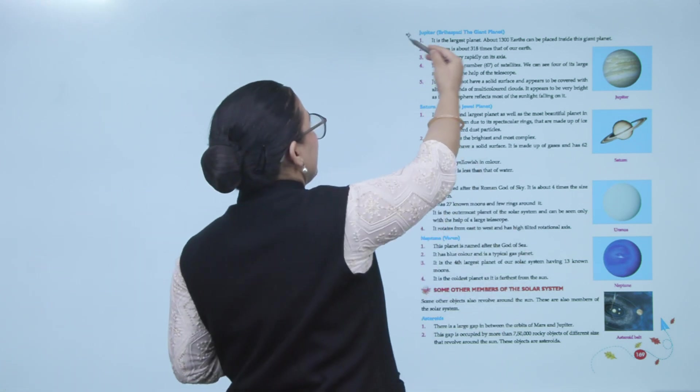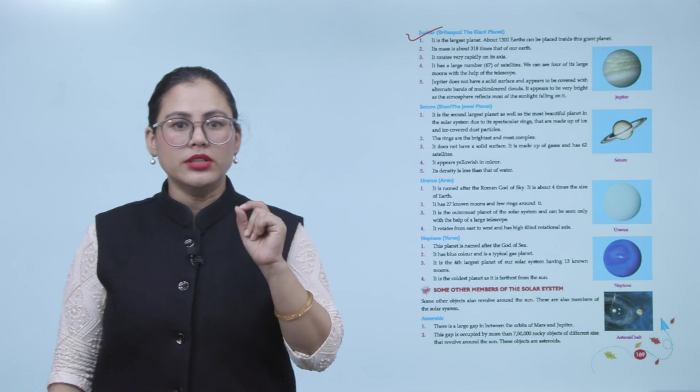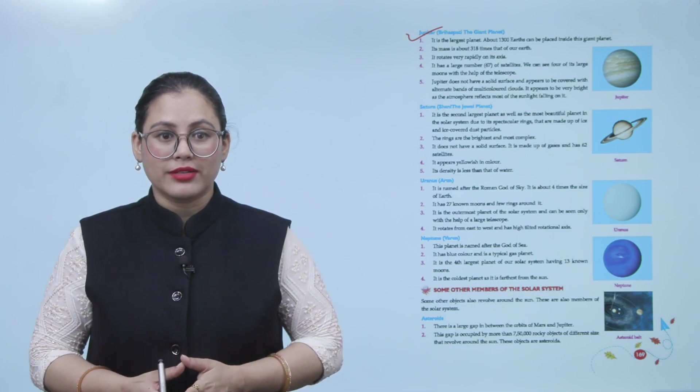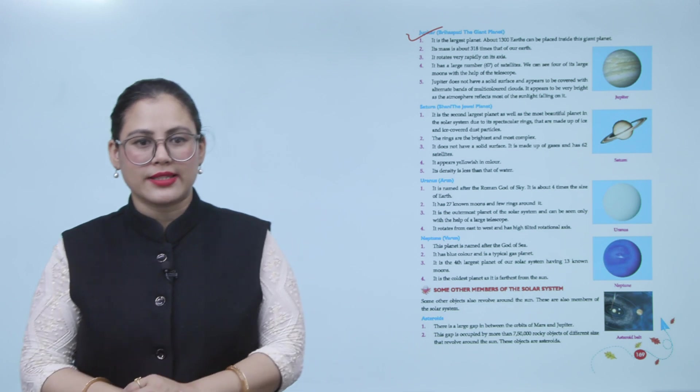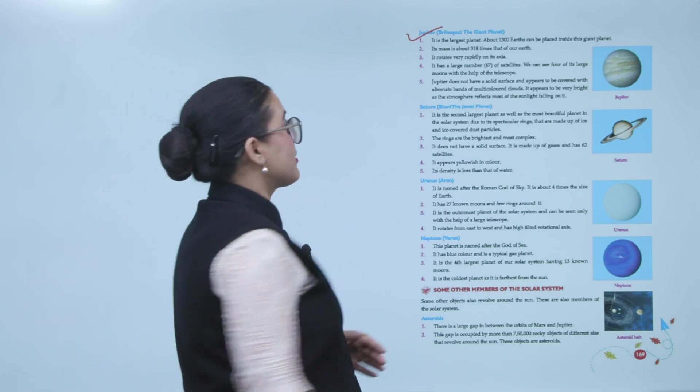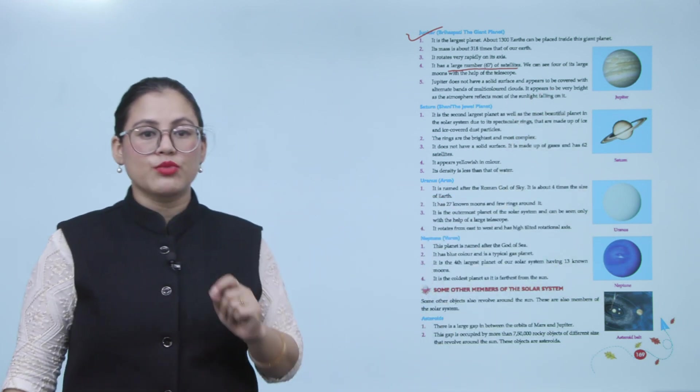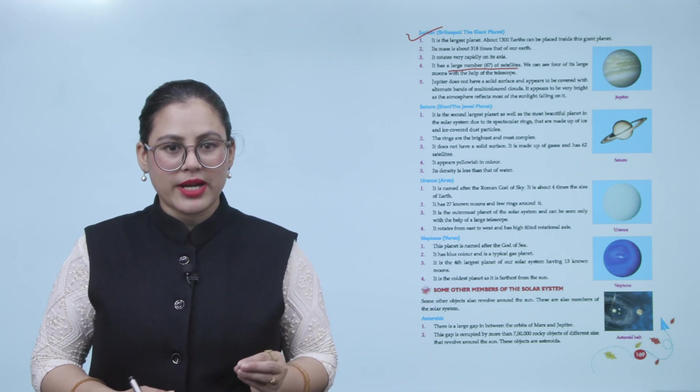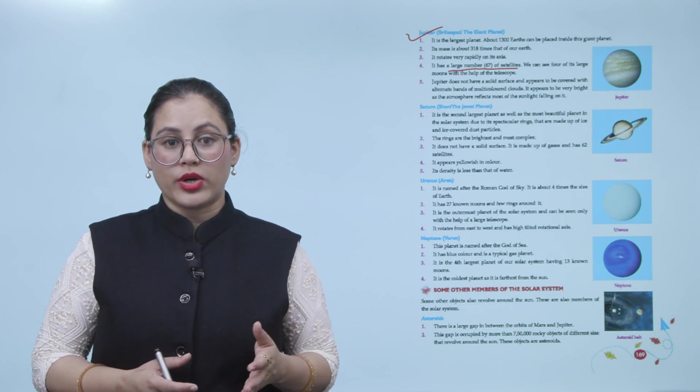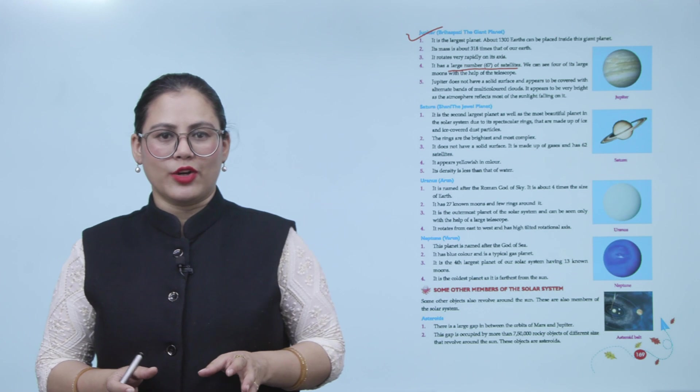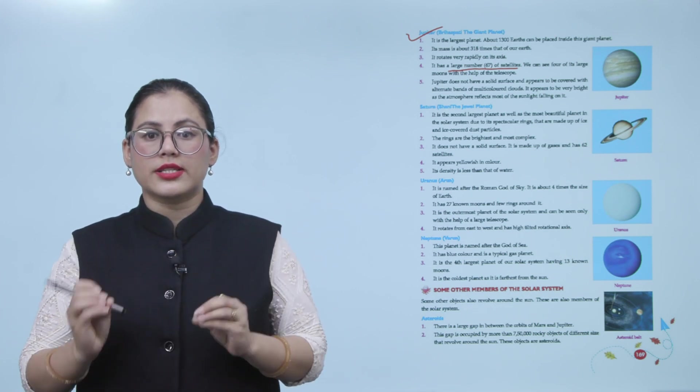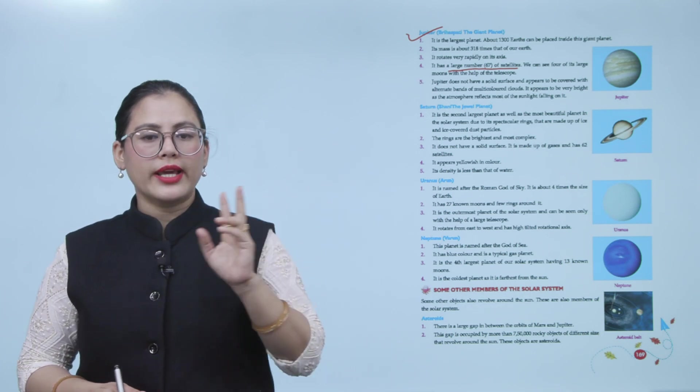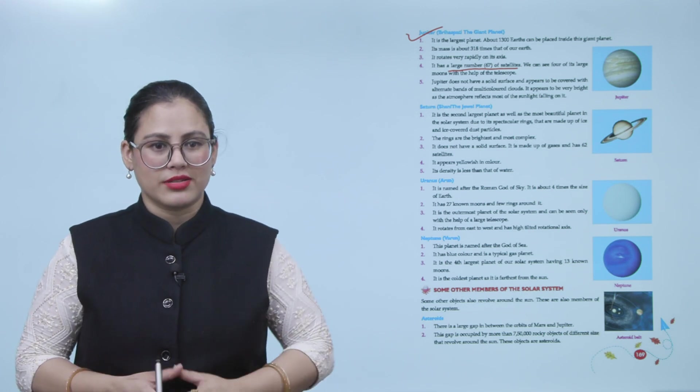Jupiter, or Brihaspati, the giant planet. It is the largest planet. About 1,300 Earths can be placed inside this giant planet. Number two: Its mass is about 318 times that of Earth. Number three: It rotates very rapidly on its axis. Number four: It has a large number—67—of satellites. We can see four of its large moons with the help of a telescope. Number five: Jupiter does not have a solid surface and appears to be covered with alternate bands of multi-colored clouds. It appears to be very bright as the atmosphere reflects most of the sunlight falling on it. This is the biggest planet, and it is so big that you can fit 1,300 Earths within it.